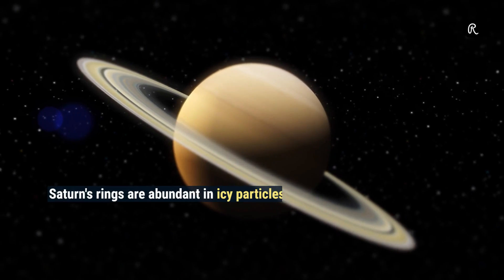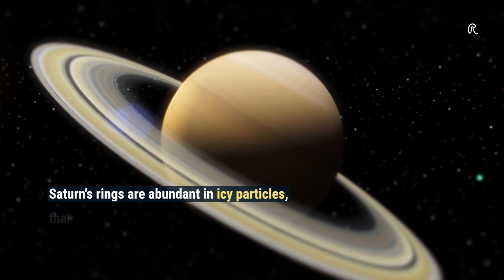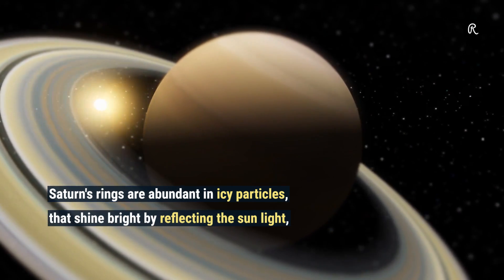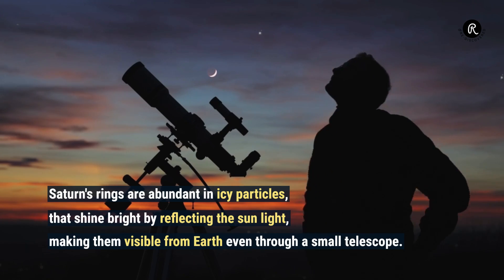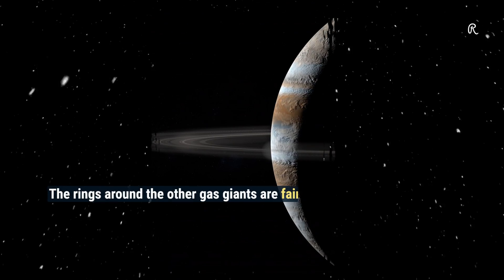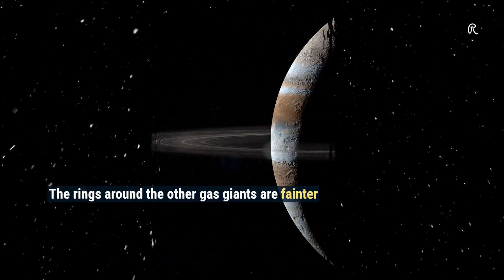Saturn's rings are abundant in icy particles that shine bright by reflecting the sunlight, making them visible from Earth even through a small telescope. The rings around the other gas giants are fainter and were discovered much later.